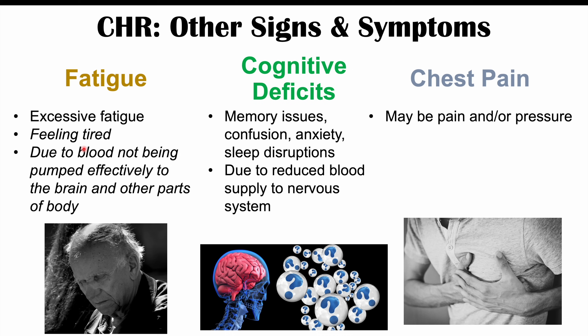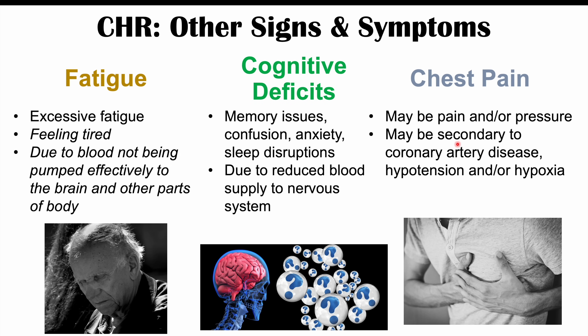Chest pain — which may present as pain or pressure — can also occur. It can be secondary to underlying coronary artery disease, or due to hypotension from the ineffective pumping of blood, leading to reduced blood flow through the aortic valve and into the coronary arteries, or hypoxia through the same mechanism. If not enough blood is pumped through the heart, insufficient blood reaches the coronary vessels, causing anginal chest pain. For more on congestive heart failure, please check out the full lesson on this topic.